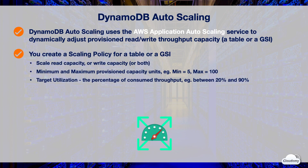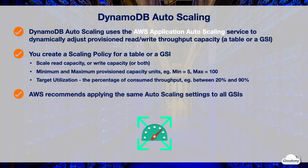With auto scaling, you can create a scaling policy for a table or GSIs. The scaling policy specifies whether to scale read capacity, write capacity, or both, and sets the minimum and maximum provisioned capacity units. The policy also contains a target utilization — the percentage of consumed throughput at a point in time. Auto scaling uses the target tracking algorithm to adjust throughput upward or downward so that actual capacity utilization remains near the target. For example, you can set the auto scaling target utilization between 20 and 90 for your read and write capacity.